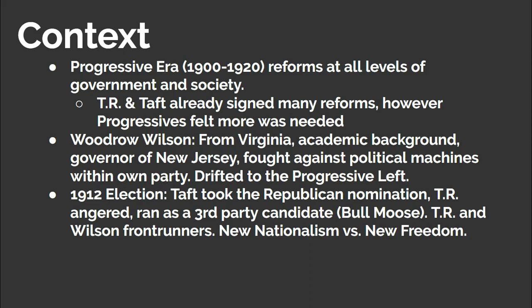The 1912 election was a fascinating one. While the Democrats nominated Wilson, the Republicans were in turmoil as a rift developed between factions of Taft and Roosevelt. Taft would become the nominee, but a dejected and angered Roosevelt ran as a third-party candidate for the Bull Moose Party. There was also another candidate, Eugene V. Debs, who carried a significant amount of support as a socialist candidate. The race came down to Roosevelt and Wilson, who had competing progressive platforms — Roosevelt's New Nationalism and Wilson's New Freedom. The two platforms had similarities, but there were certain philosophical differences in the role of government and the handling of trusts.